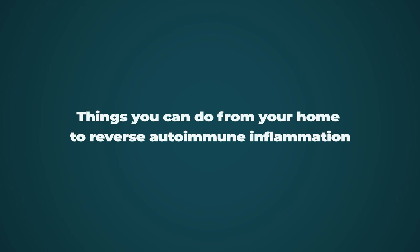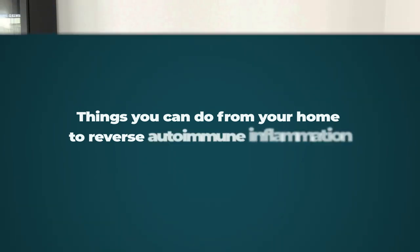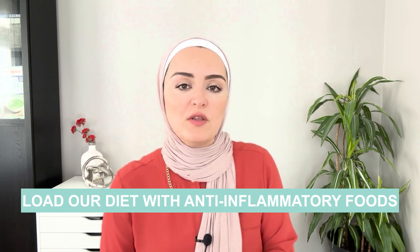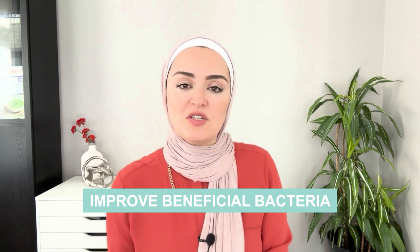Now let's talk about the things you can do from your home starting now to reverse autoimmunity and calm the inflammation. The first step is to load your diet with anti-inflammatory foods. Get antioxidants from vegetables first, then from fruit. Incorporate a lot of herbs and aromatics because they have antioxidants and help balance the microbiome. Get healthy fats from olive oil, avocado, and omega-3-rich foods. Fiber from a variety of sources as well. All of these will help reduce inflammation and improve the diversity and richness of our microbiome.